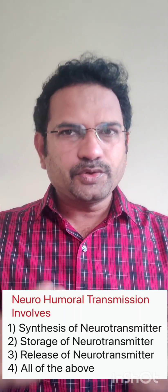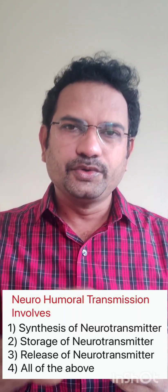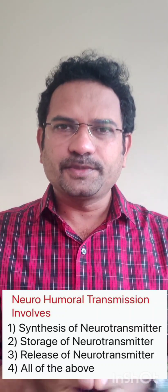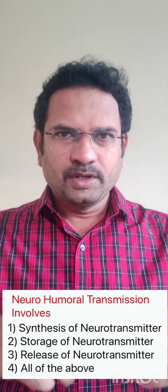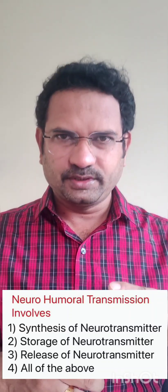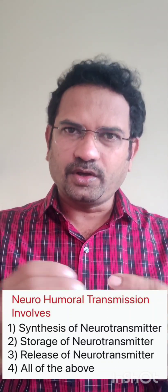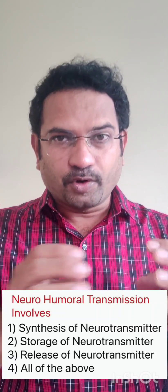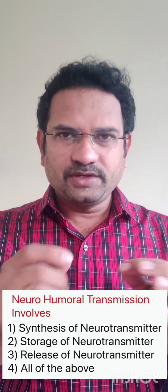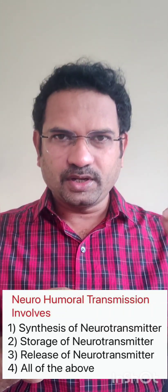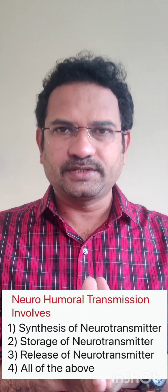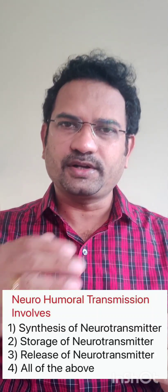I made this question to make you aware of the steps involved in neurohumoral transmission. Neurohumoral transmission — 'humor' means body fluids. Neurons synthesize neurotransmitters and release them into body fluids, either into the synaptic cleft or to the organ site. So the process is called neurohumoral transmission. Whatever information is in the neuron is transmitted to another neuron through neurotransmitters.